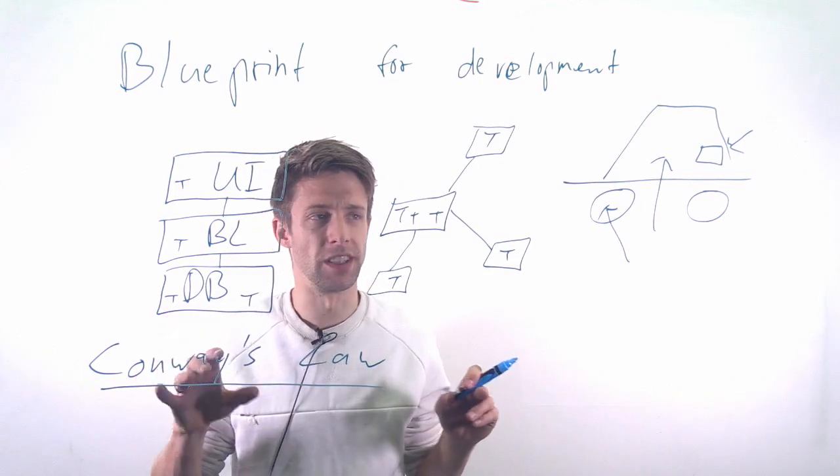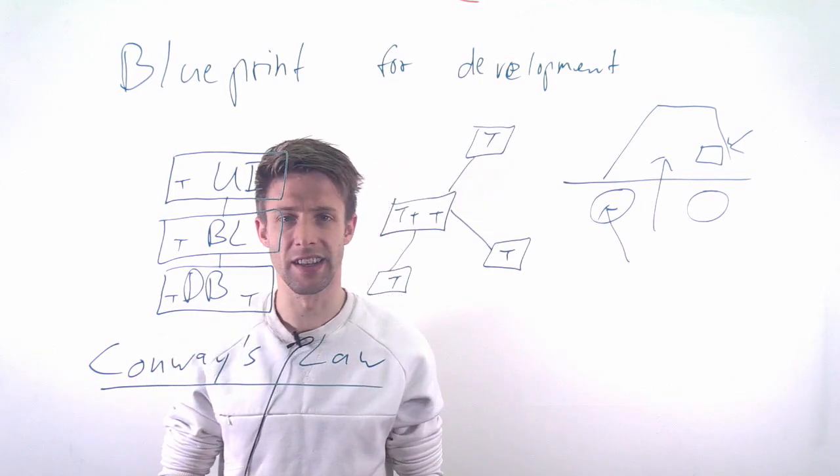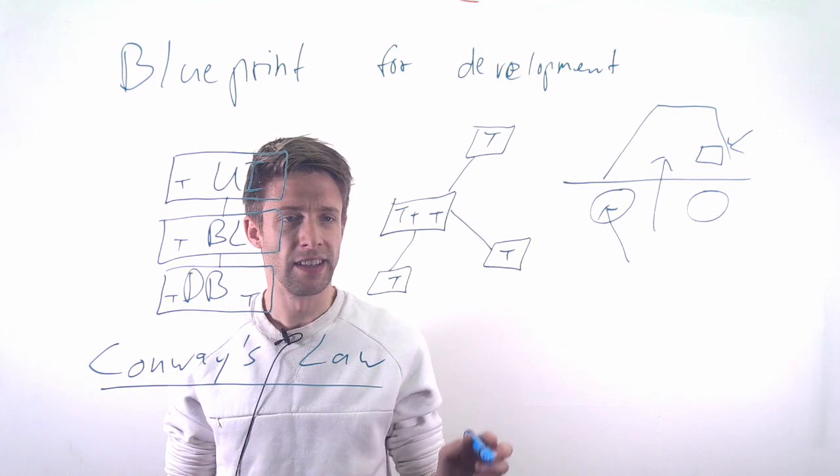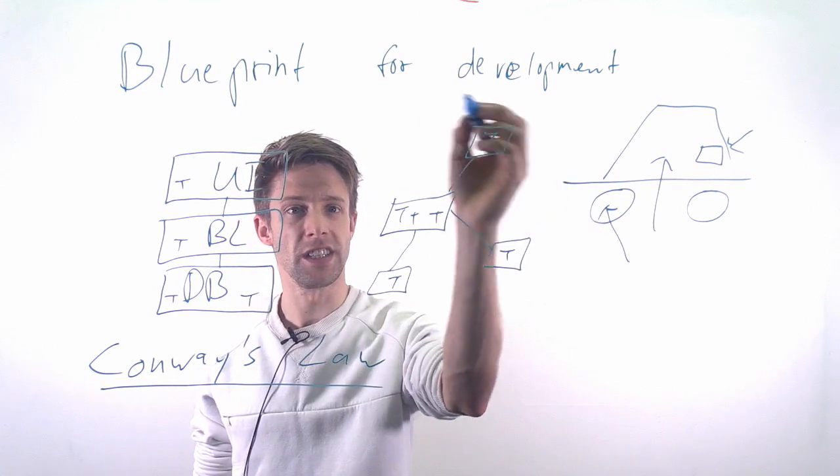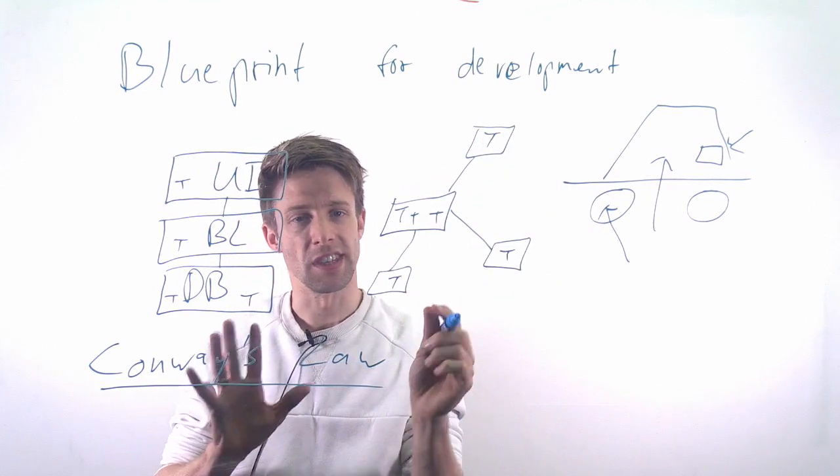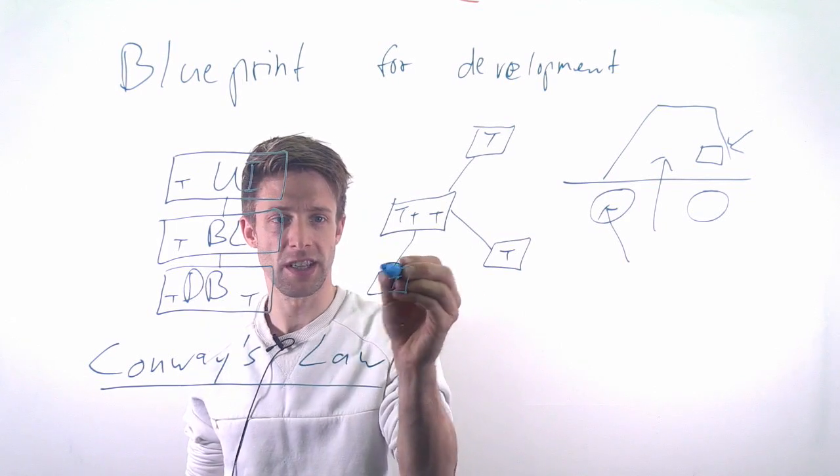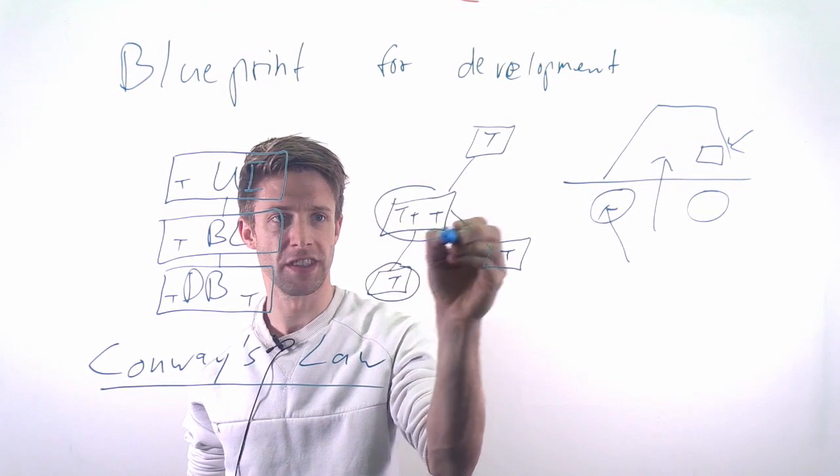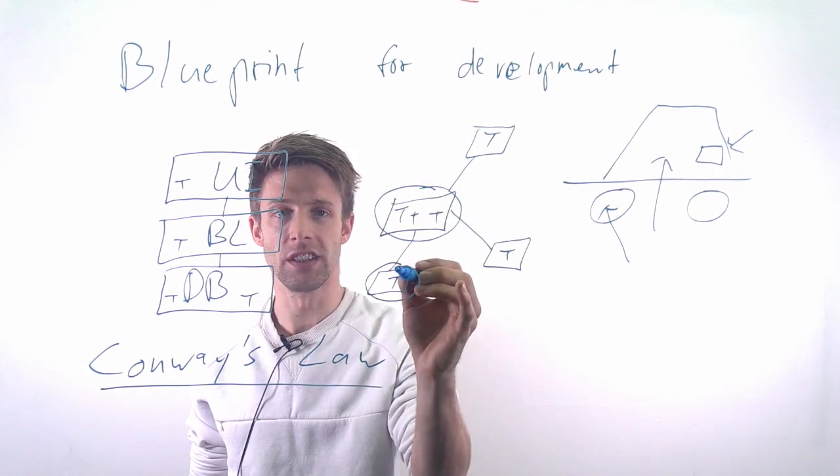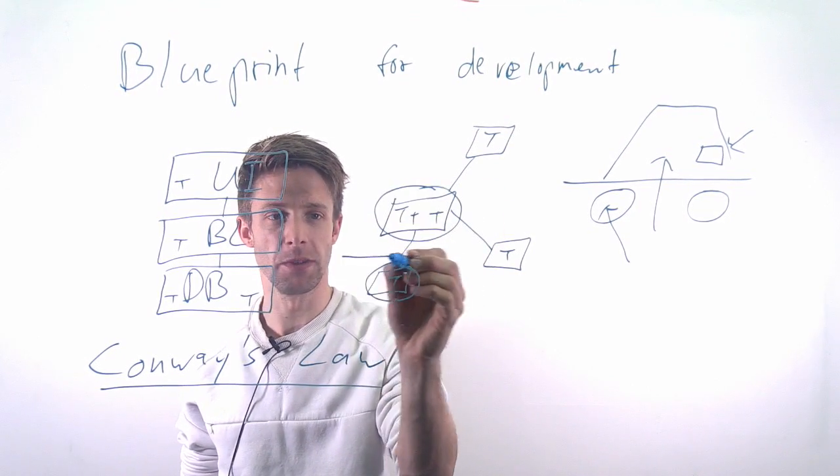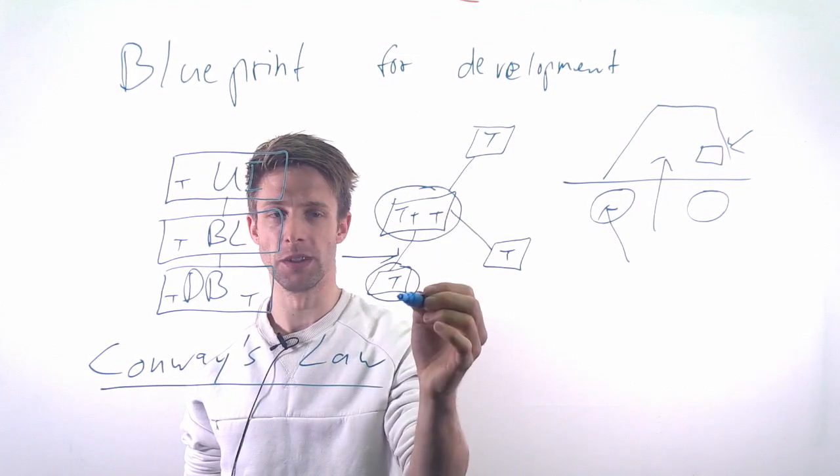And this is highly important in software engineering to understand, because one thing that we have to consider is that if our organization looks like this, this also says a lot about how the communication has to look like. Because if we have a team here and a number of teams here and there is an interface, it also means that the communication needs to be between these teams.